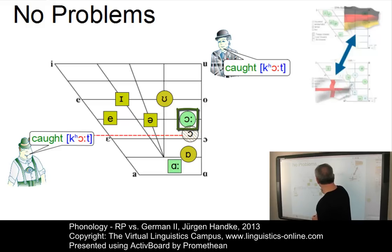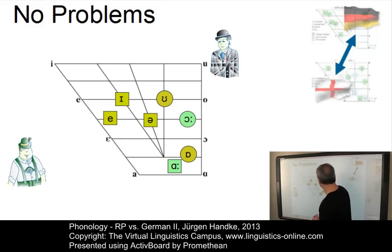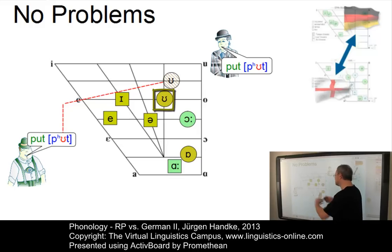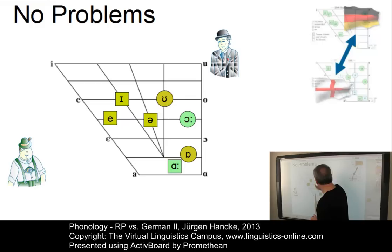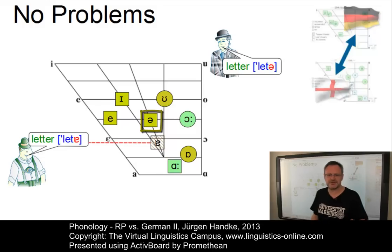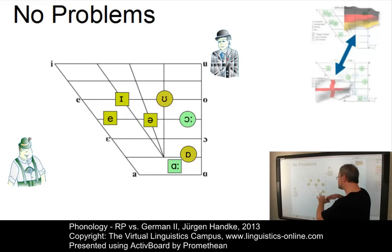Then there is a long O as in CAUGHT — concentrate on making it really long. The short U as in PUT is not a problem, though some Germans produce it a little bit too high. And the schwa as in LETTER — Germans should concentrate on the fact that the final element is really a schwa and not the low central A triggered by the occurrence of a German post-vocalic R in spelling. But apart from these slight issues, these are not really problematic at all.